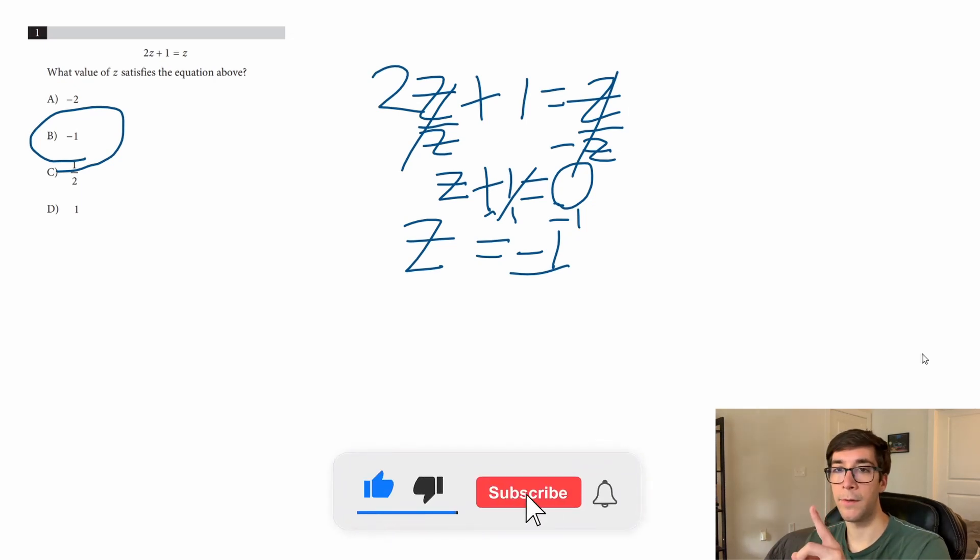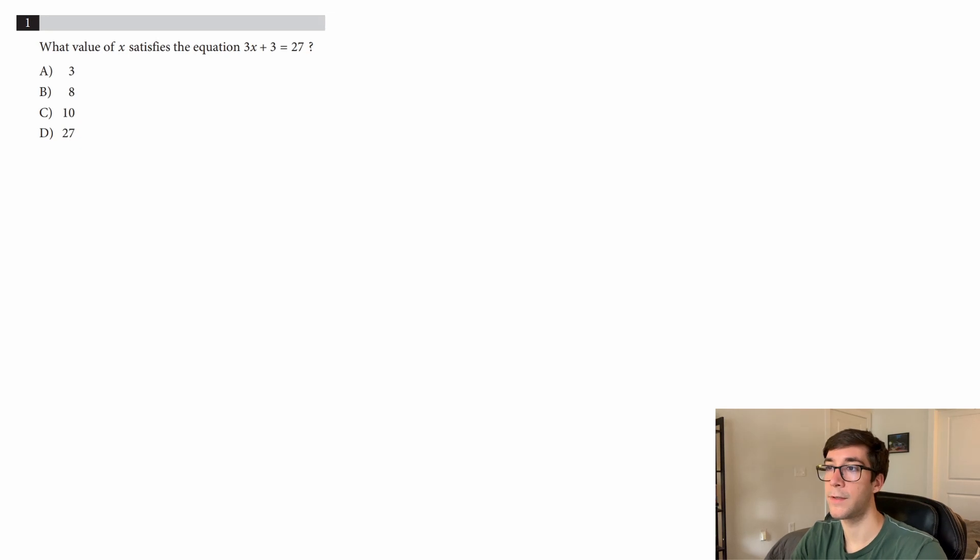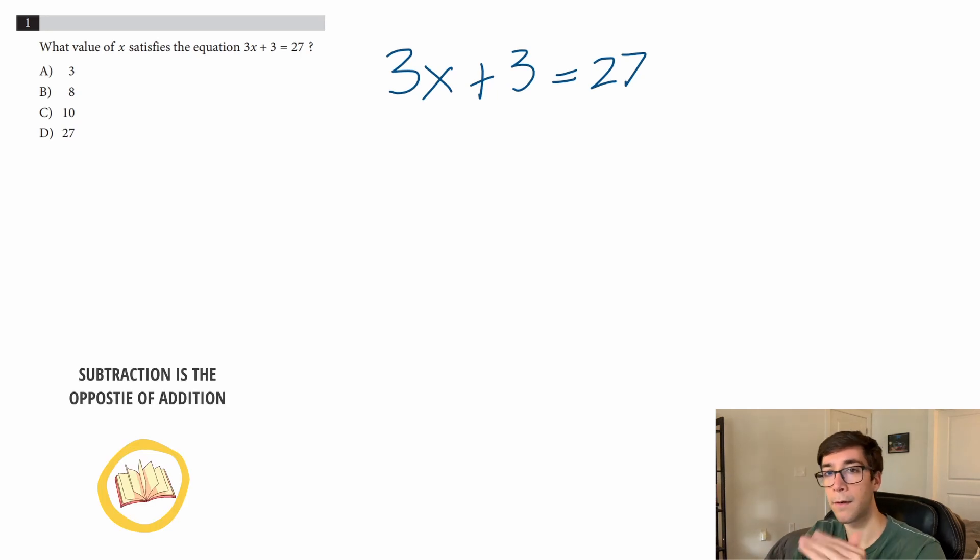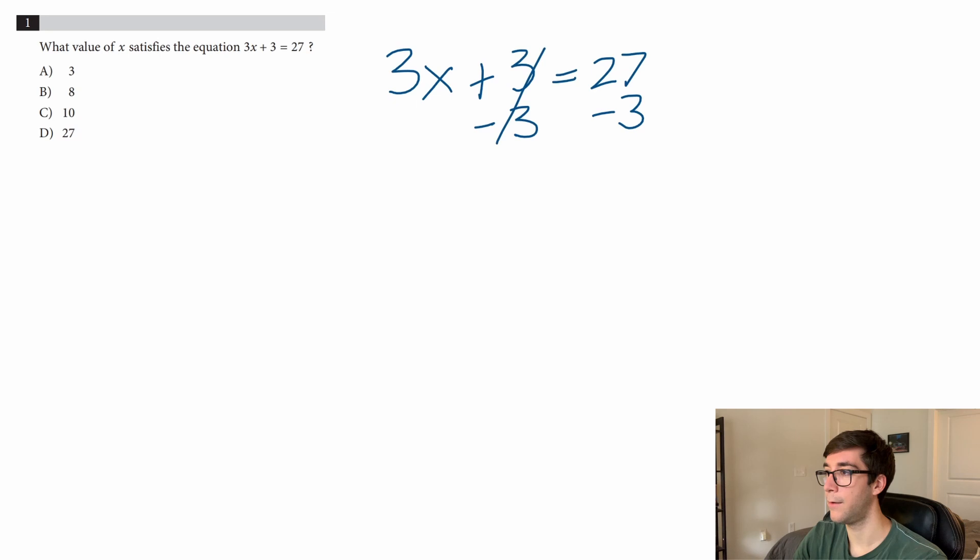Let's try another problem. What value of x satisfies the equation 3x + 3 = 27? First, get rid of the plus 3 by doing the opposite—subtract 3 from both sides. 3x = 24. Now we have 3 times x, so to get just x, divide by 3: x = 24 ÷ 3 = 8. So our answer is B.